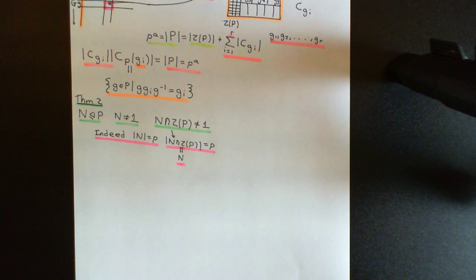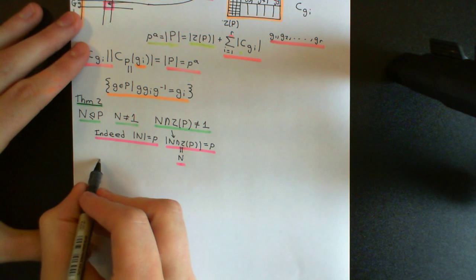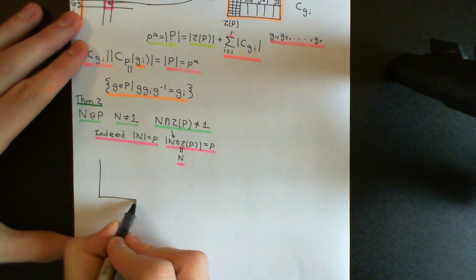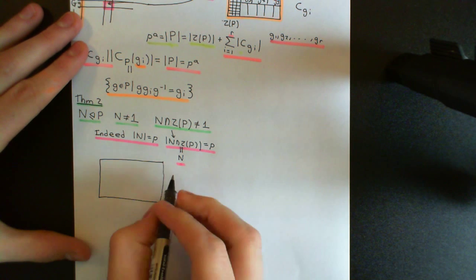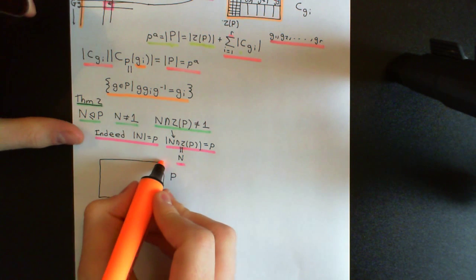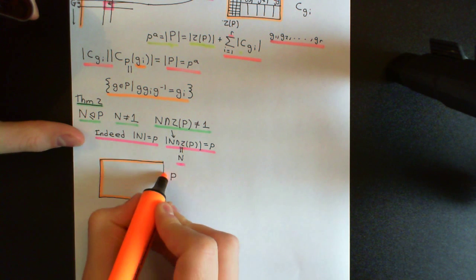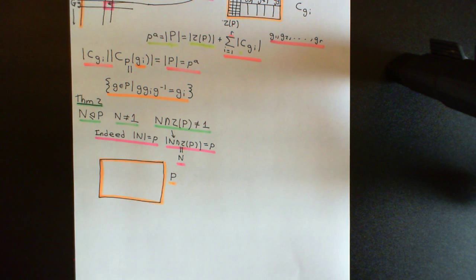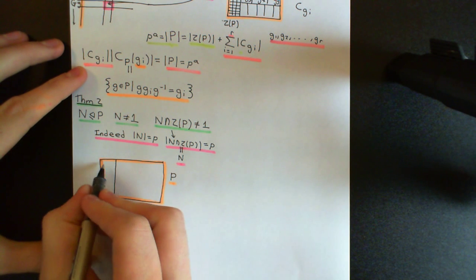How are we going to prove that if you've got a non-trivial normal subgroup of a p-group, the intersection with the centre of the p-group is not equal to the trivial subgroup? This is actually very simple. It comes down to the partition of the group into its conjugacy classes, and a variation of the class equation. We will draw out this picture of our p-group split into its conjugacy classes — outlined in orange, this is the entire p-group, partitioned down into its conjugacy classes.